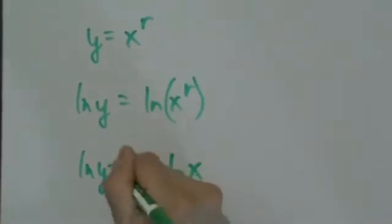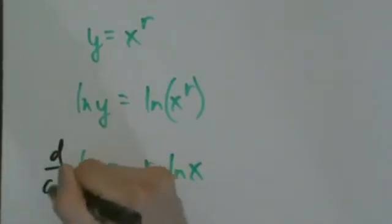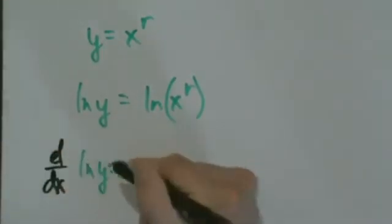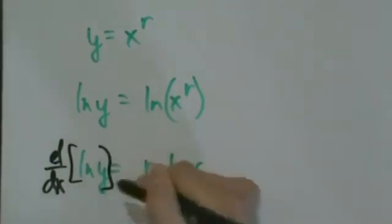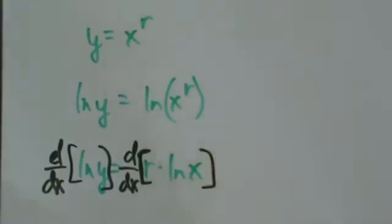And now we just take the derivative of both sides with respect to x. So if we take the derivative—wrong pen—d/dx of natural log of y equals d/dx of r times natural log of x.